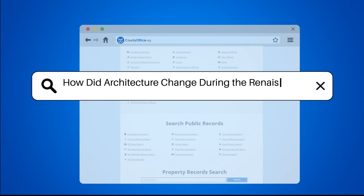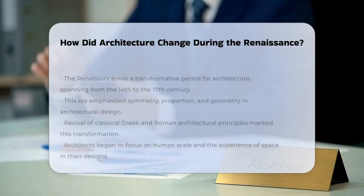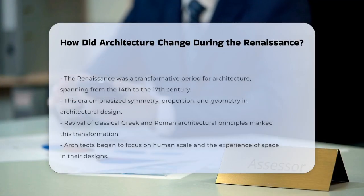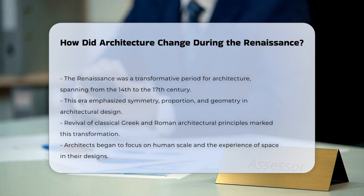How did architecture change during the Renaissance? The Renaissance marked a significant transformation in architecture, emphasizing symmetry, proportion, and geometry. This period, spanning from the 14th to the 17th century, revived classical Greek and Roman principles. Architects began to focus on human scale and the experience of space.